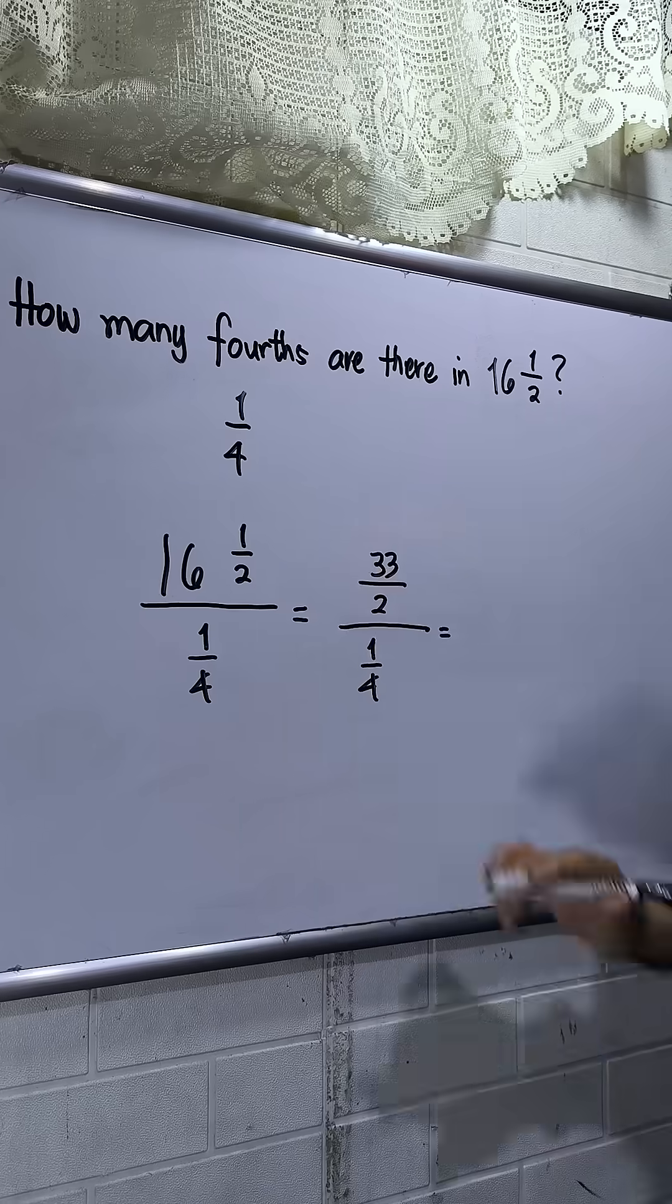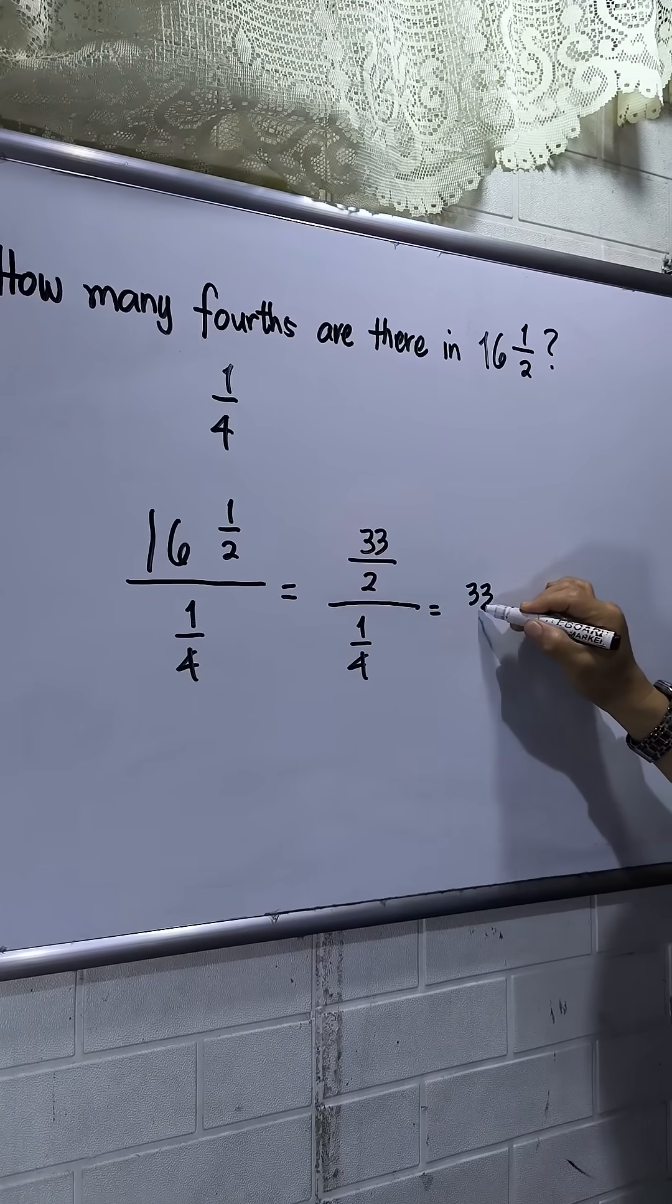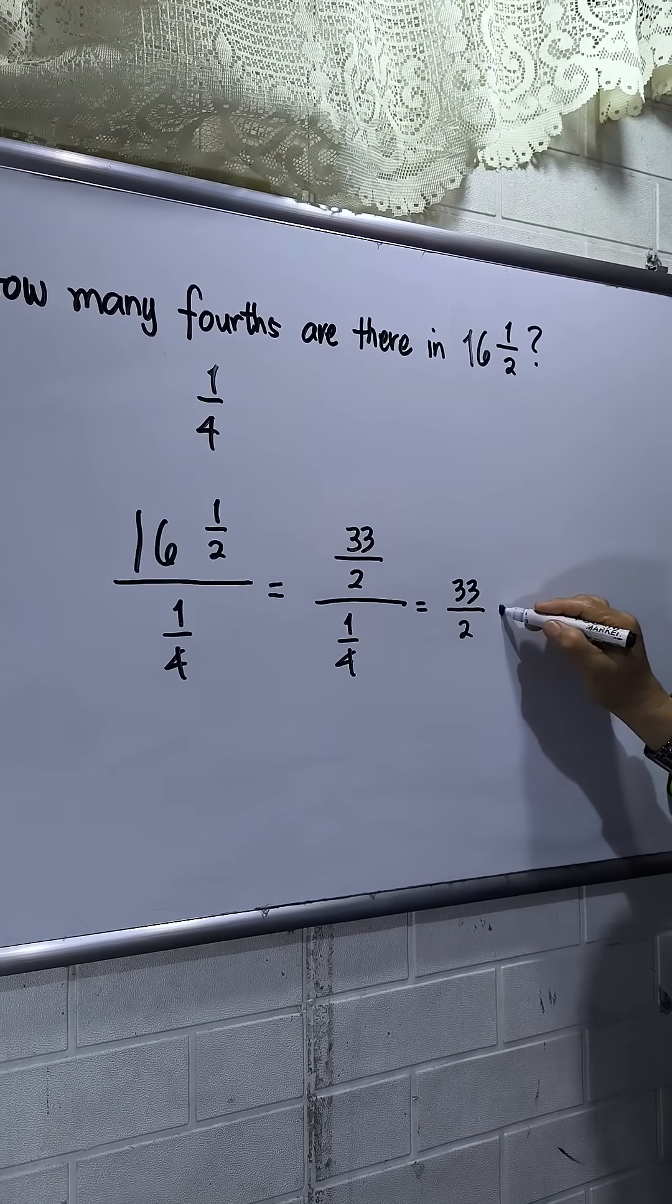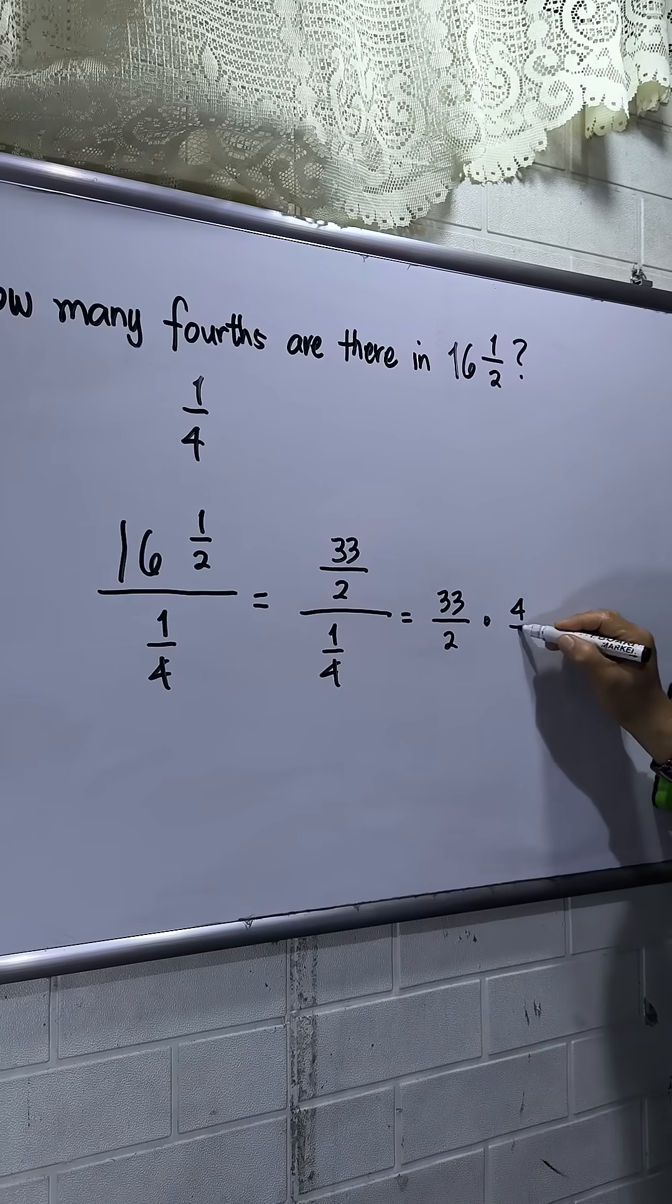So this is a complex fraction, so I'll just write first the numerator, 33 over 2. Then I will change this one to multiplication. Then upside down, 1 fourth is 4 over 1.